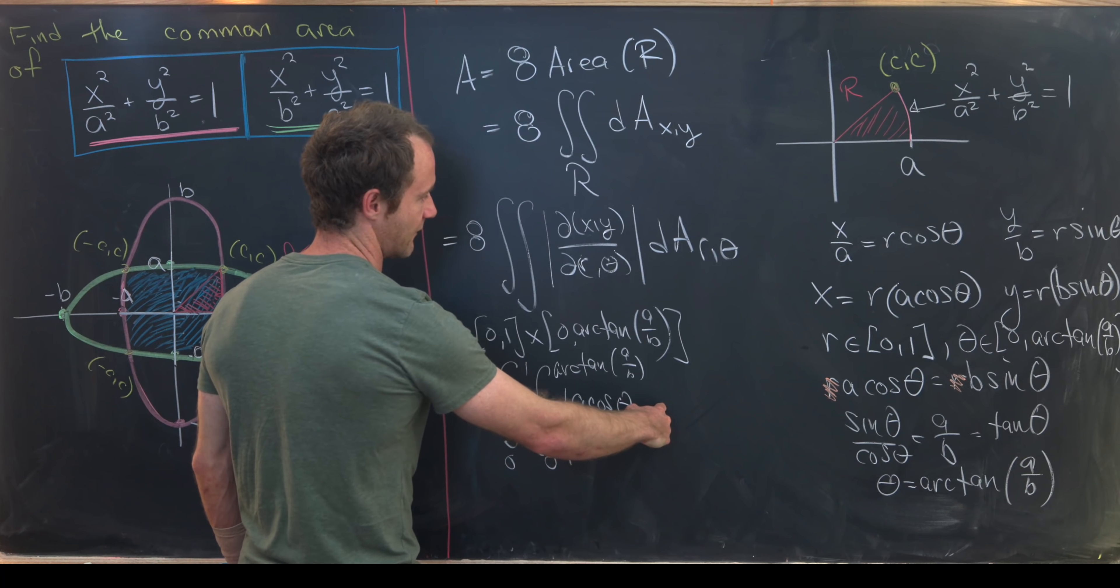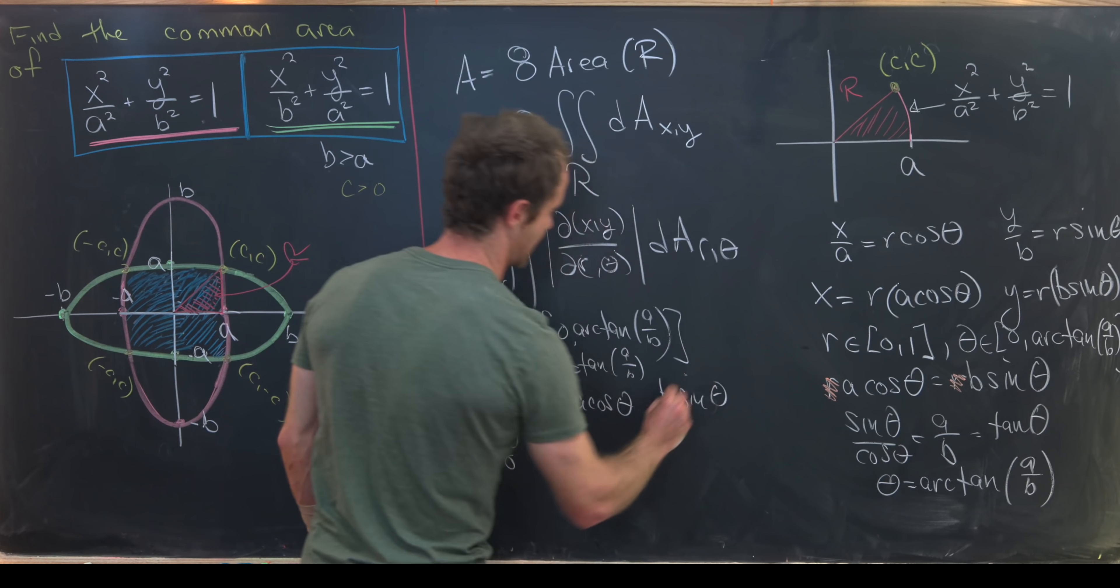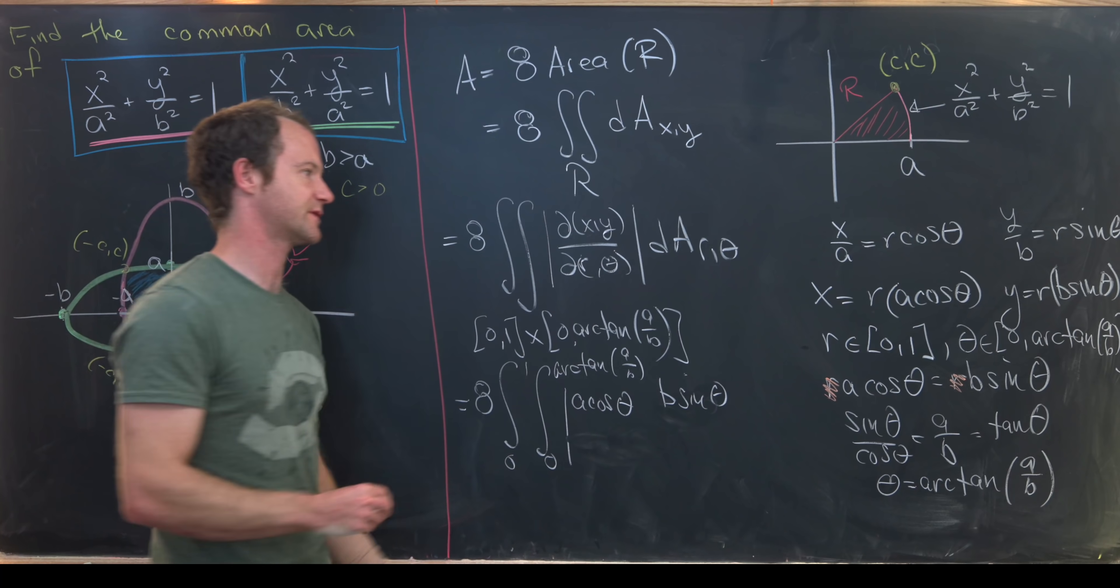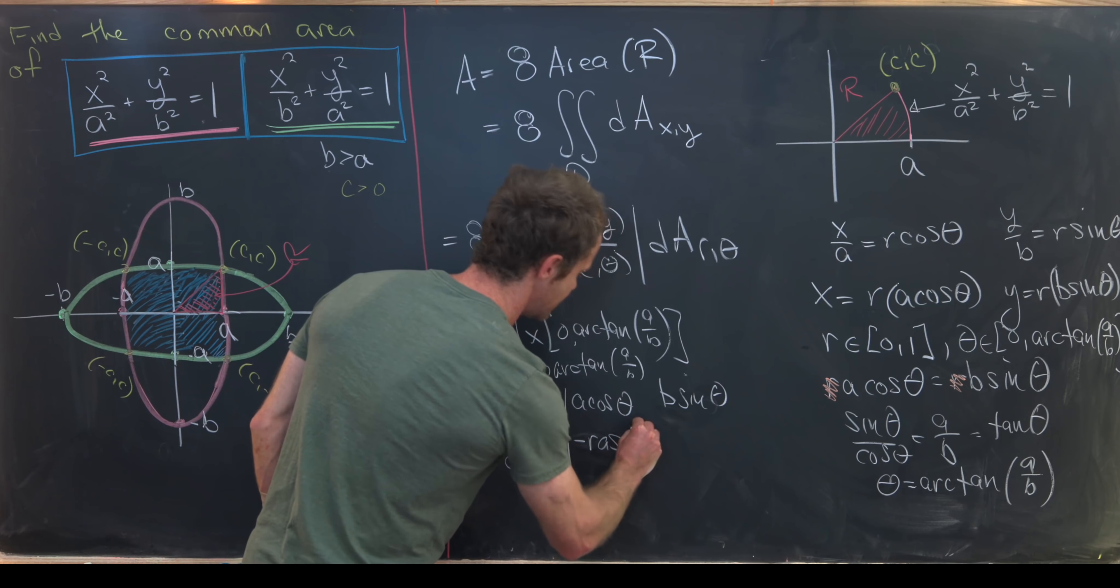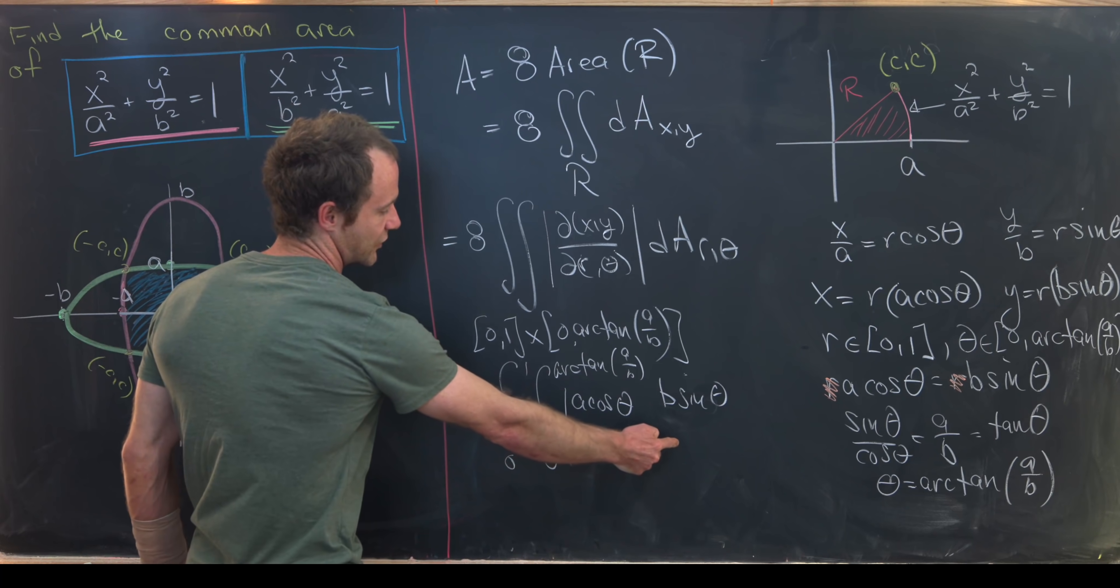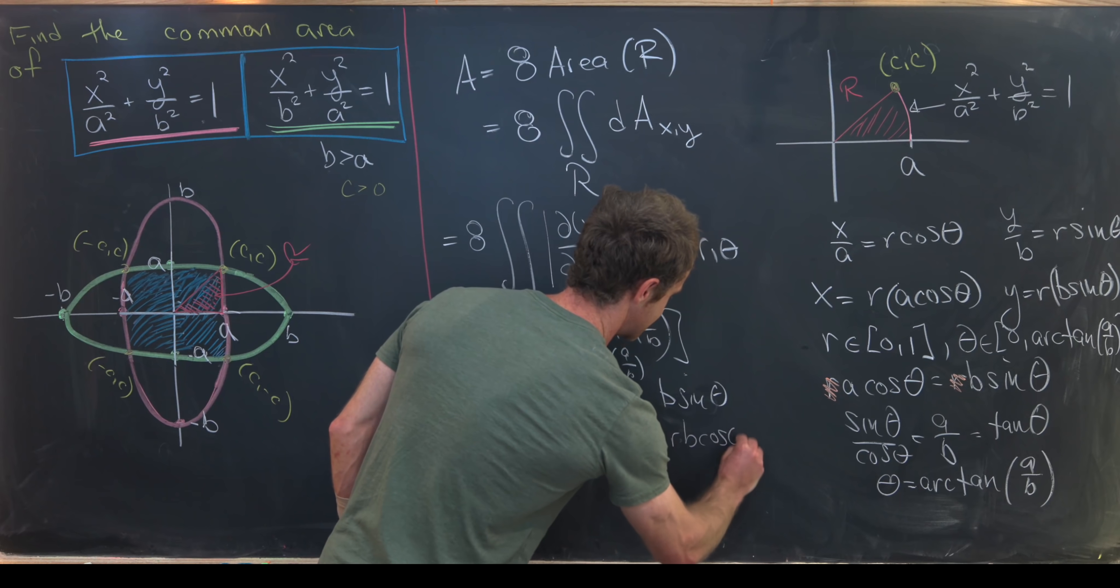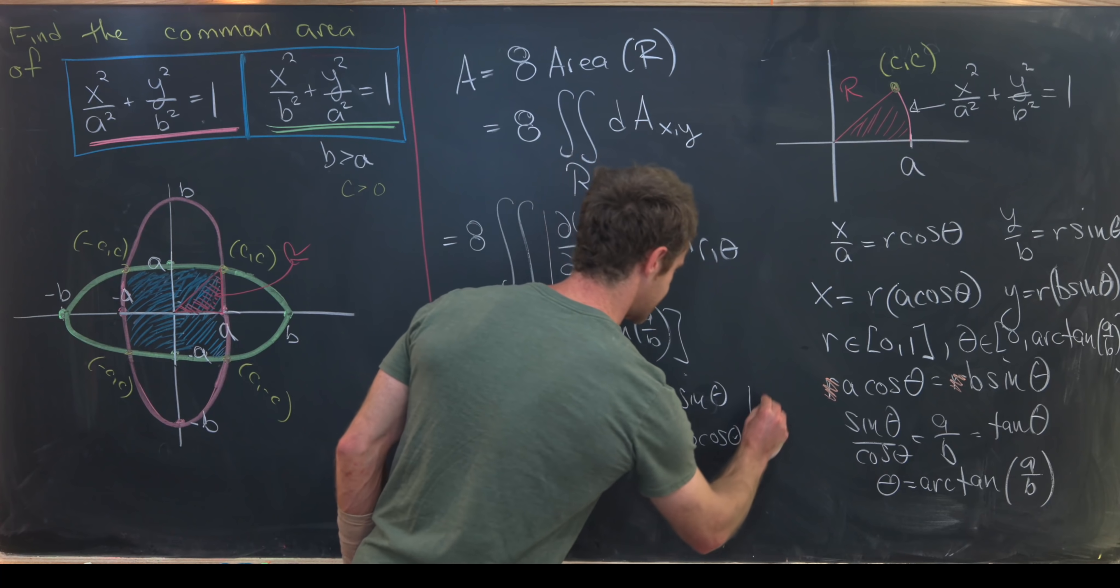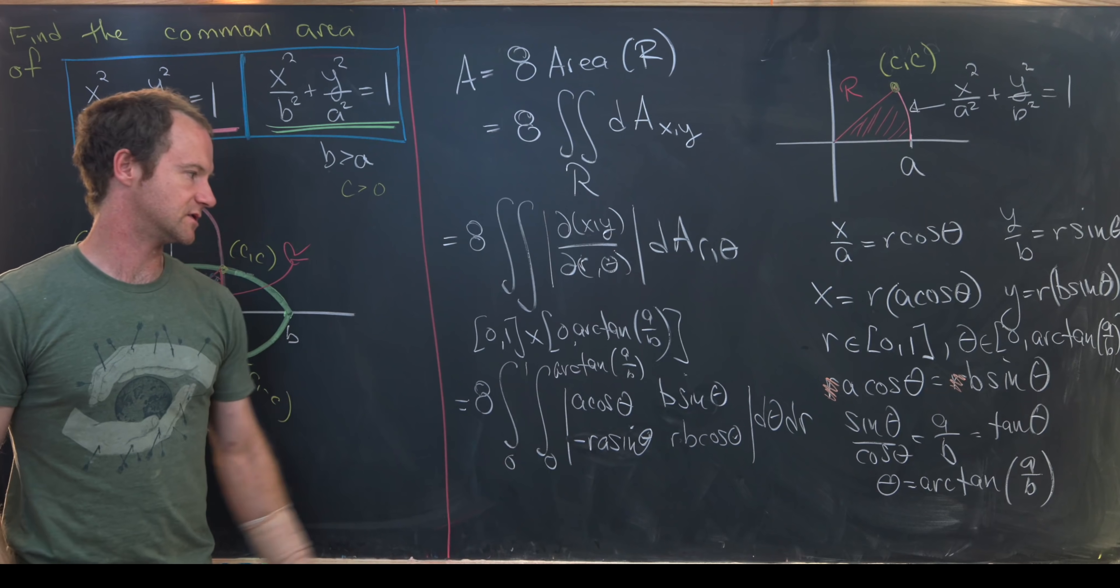And then in this entry right here, we'll have the derivative of x with respect to theta. That'll be minus r a sine theta because the derivative of cosine is negative sine. And then here we'll have the derivative of y with respect to theta, so that'll be r b cos theta. And our d a r theta becomes d theta dr in that order because of the choice we've made on the ordering of this iterated integral.